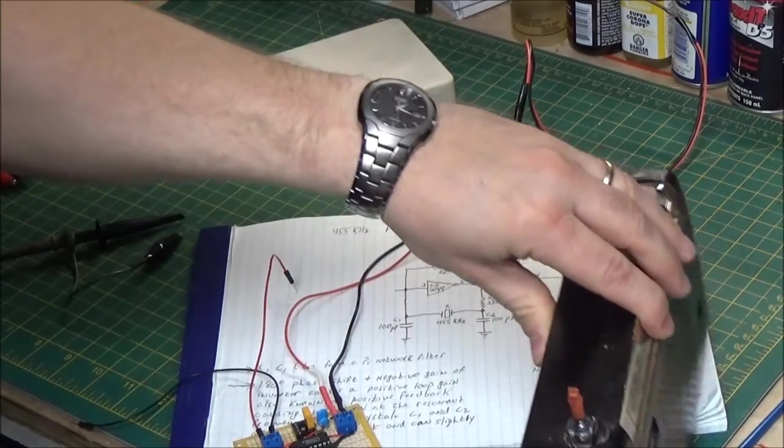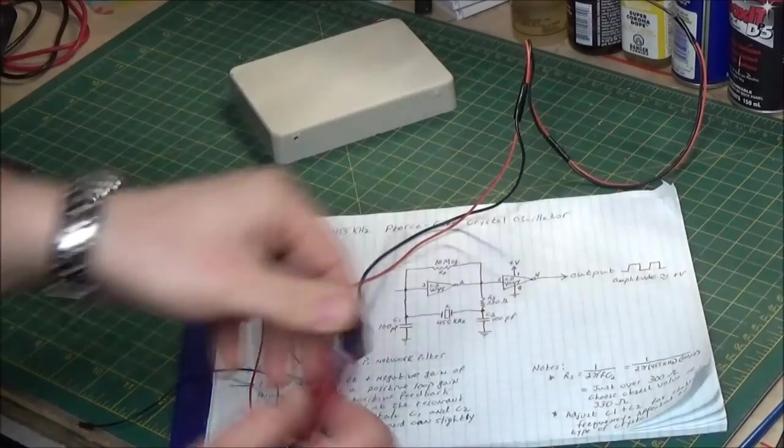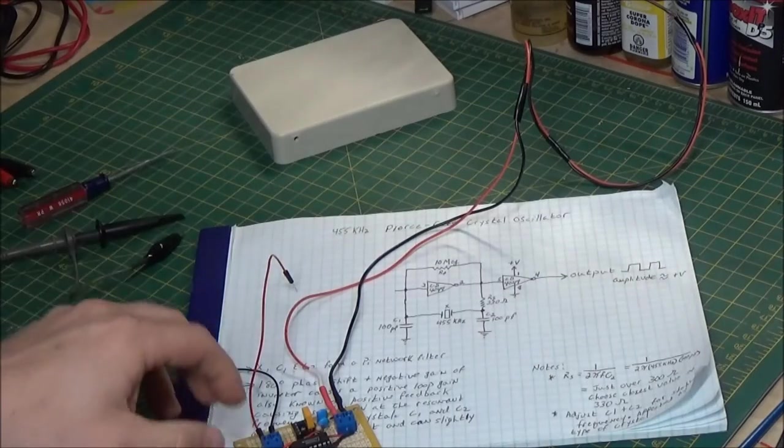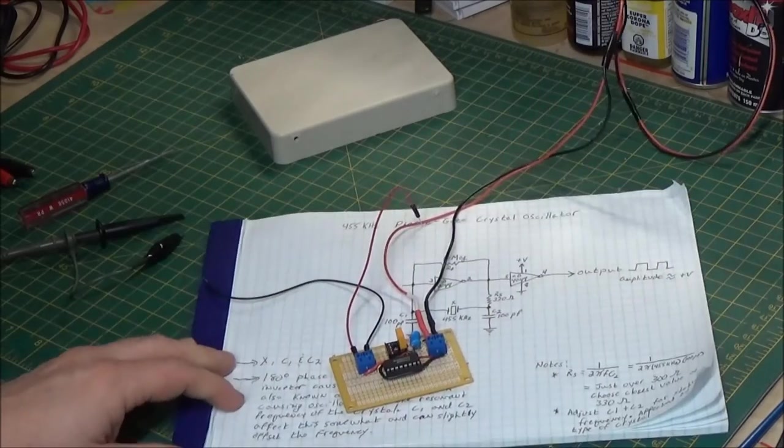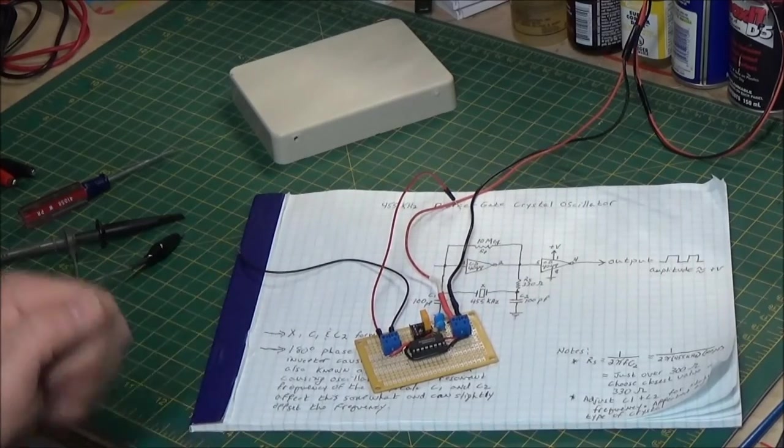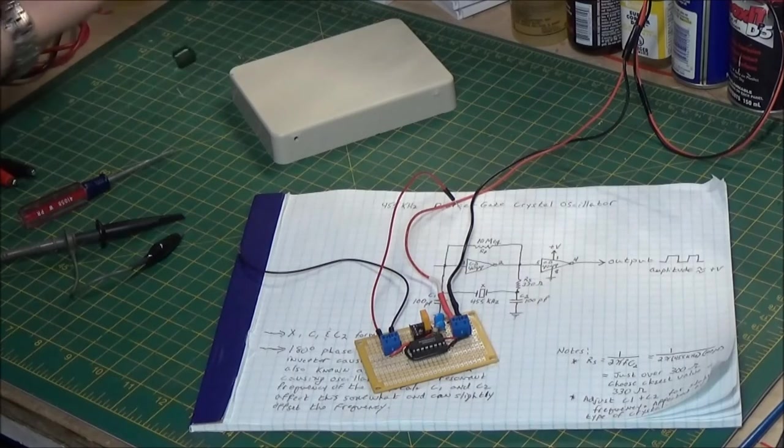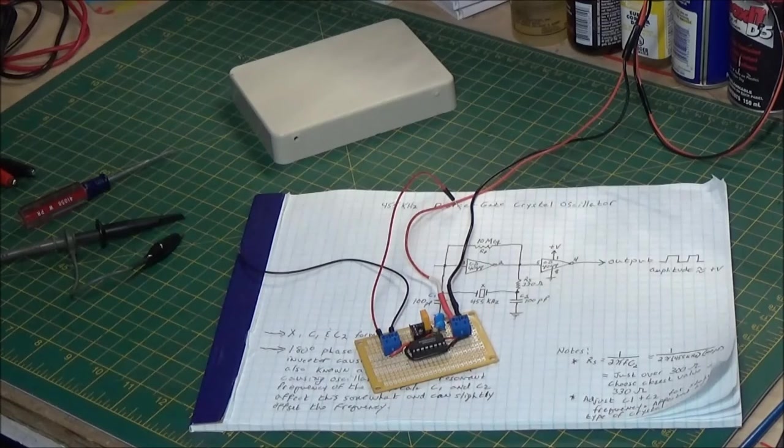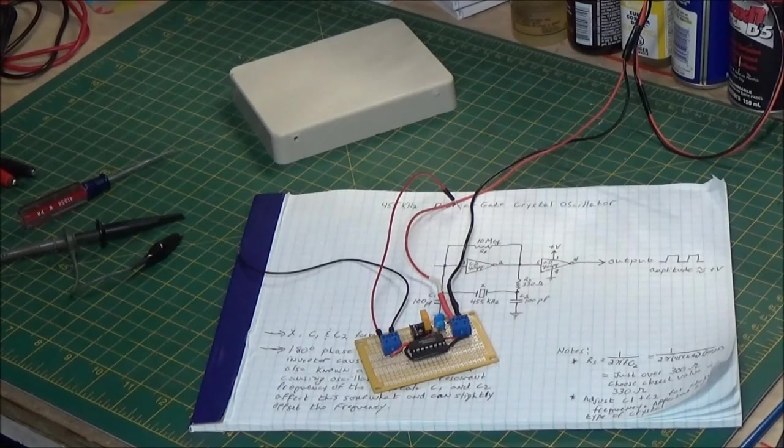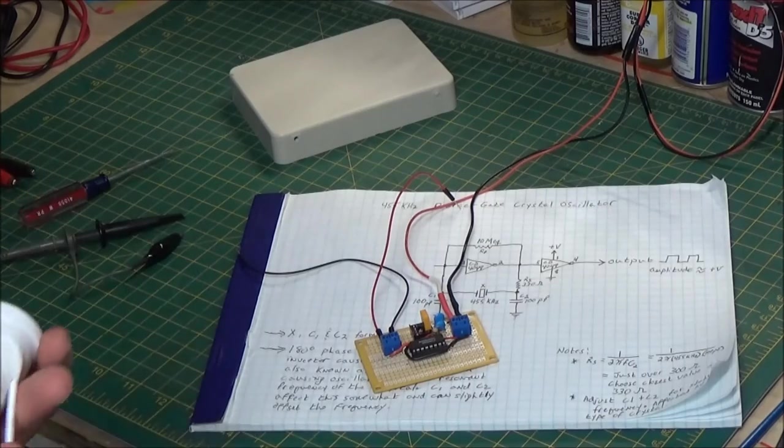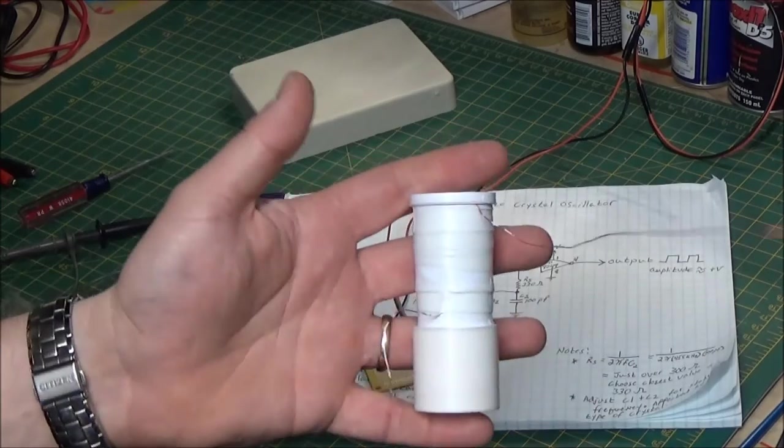I got to thinking, that's great, but it's really hard to tune in an IF without some sort of modulation. What could I do that's cheap and easy to add modulation? I didn't want to build another oscillator. I didn't want to deal with all that. I didn't want to try to modulate this signal in any way.